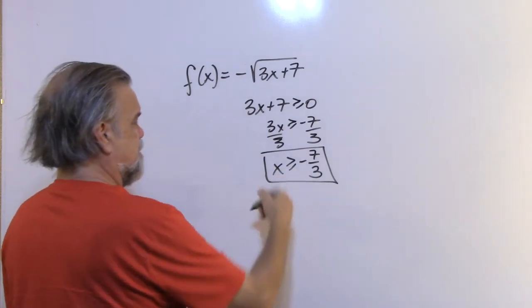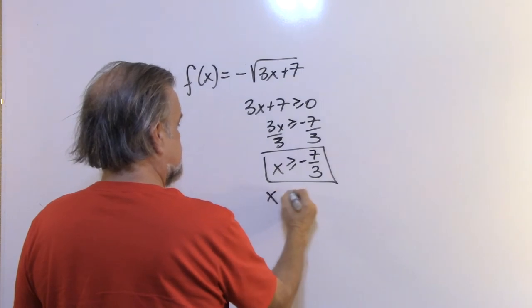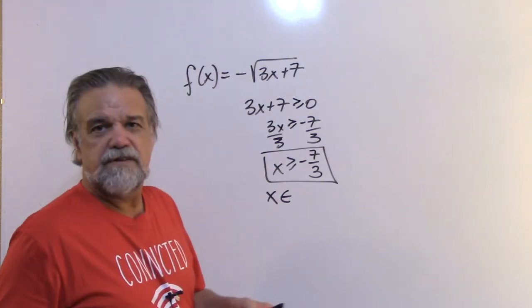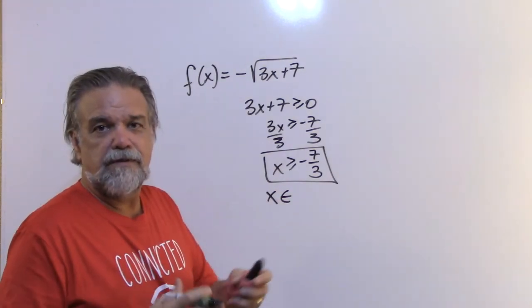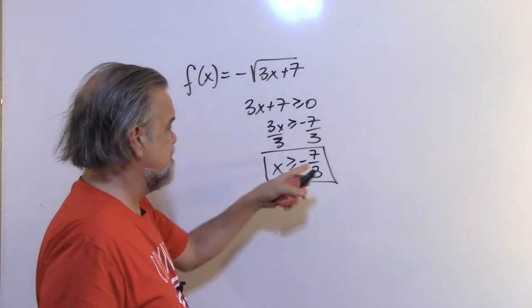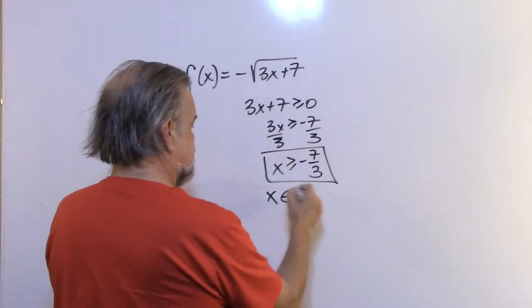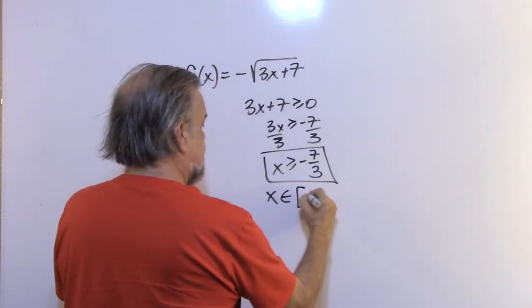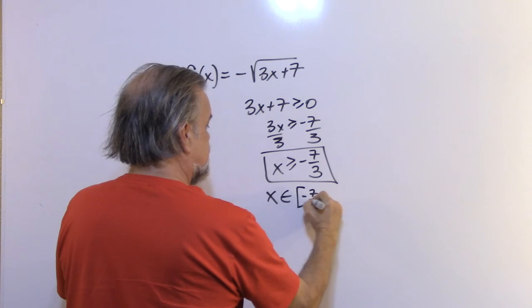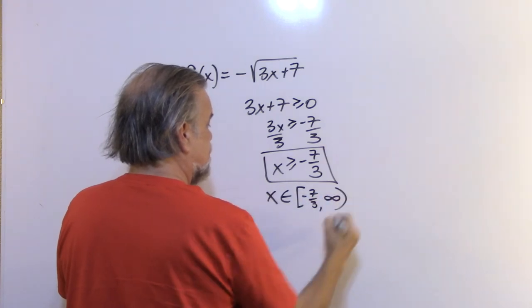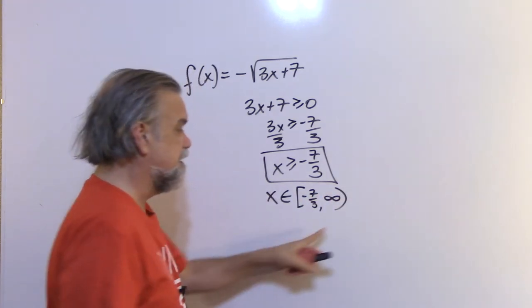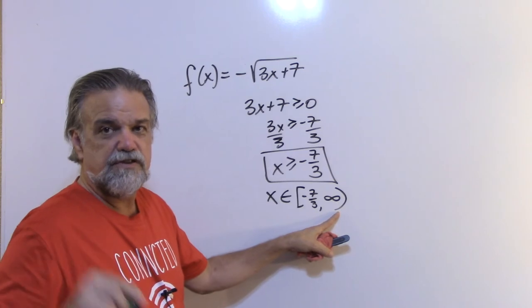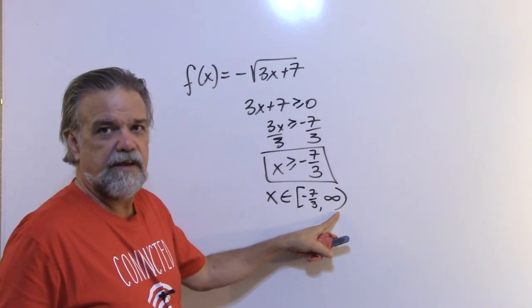Let's write the domain in a couple of ways — using inequalities and interval notation. The domain goes from -7/3 to positive infinity: [-7/3, ∞). Remember, never put a bracket on infinity — it's too big to include.